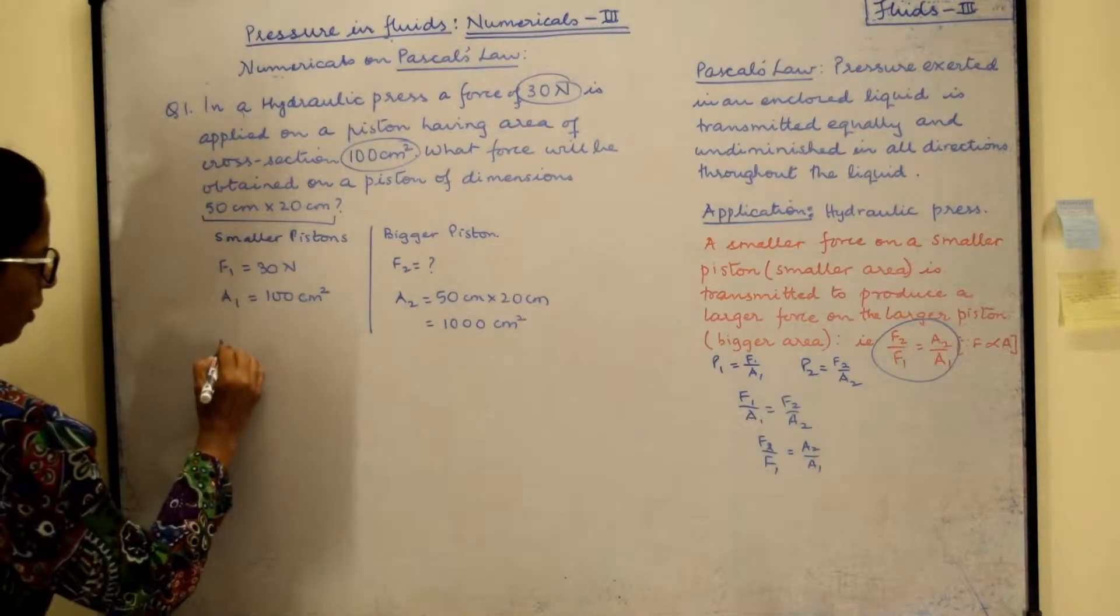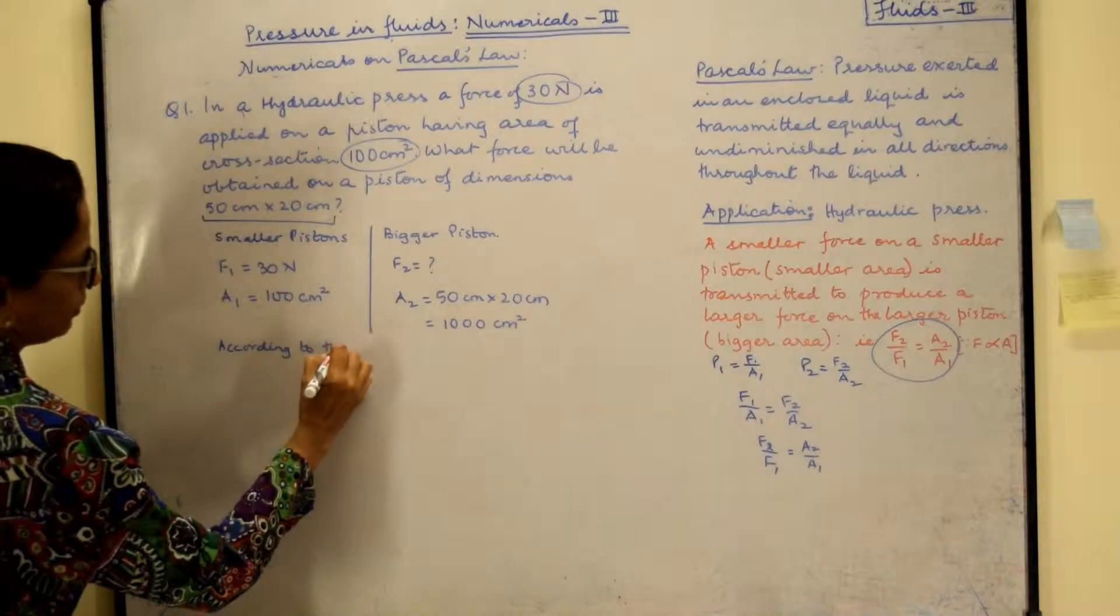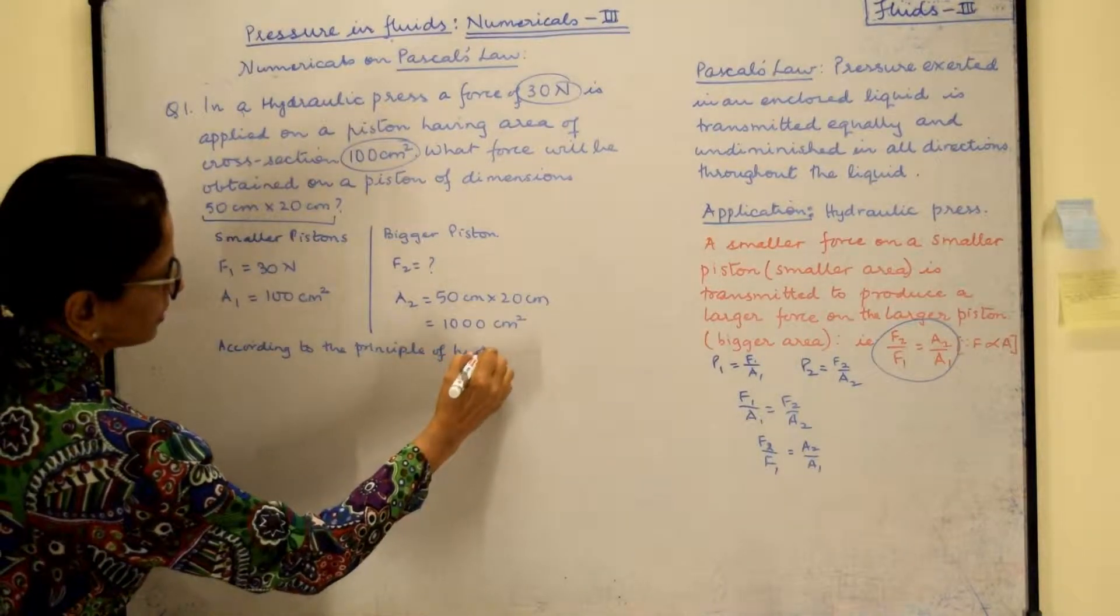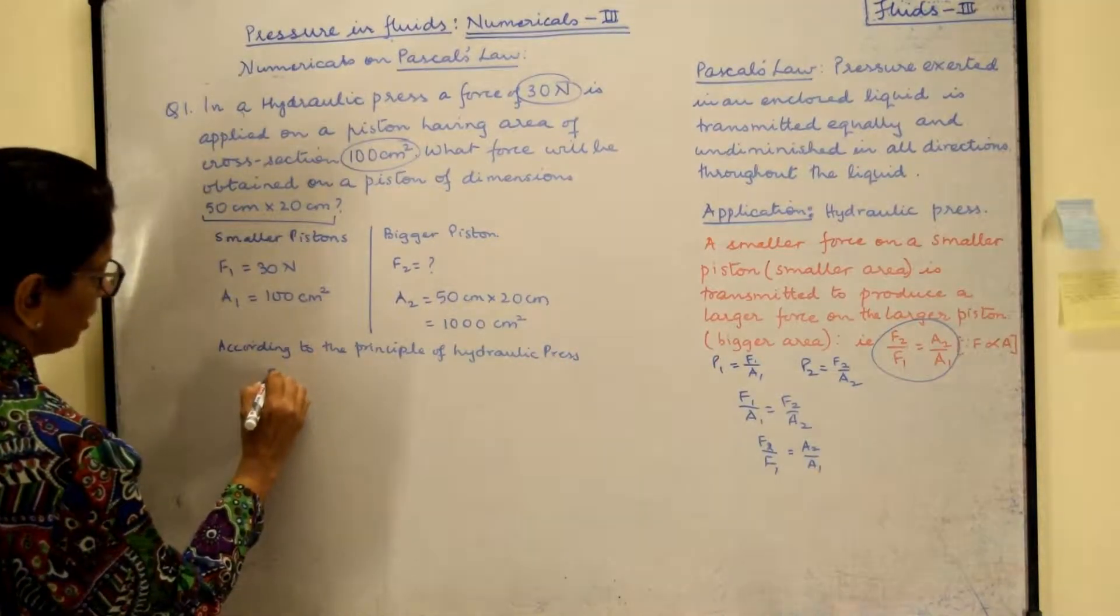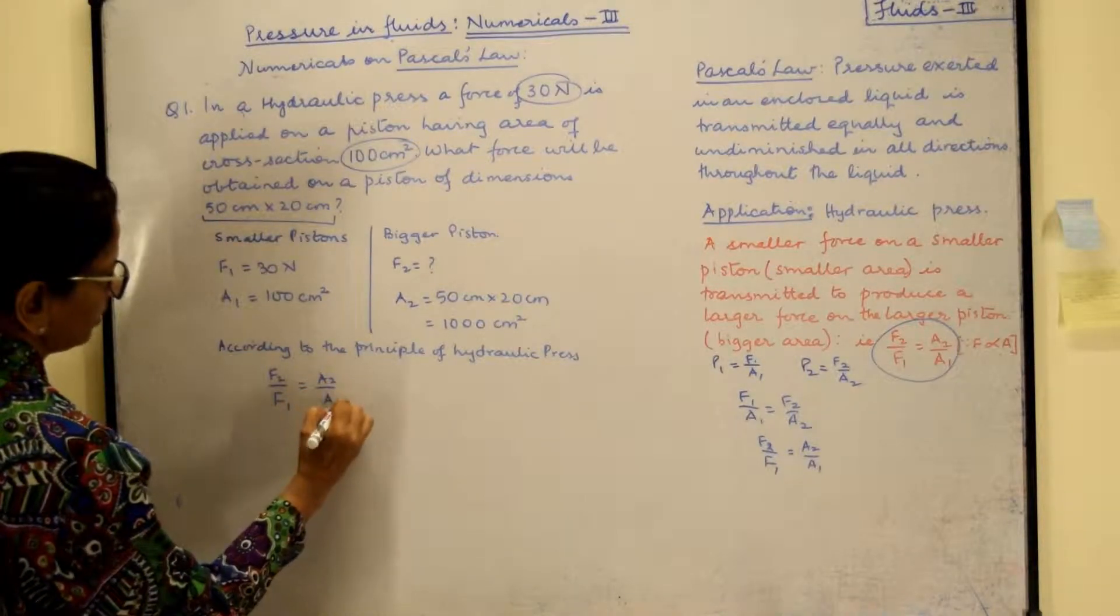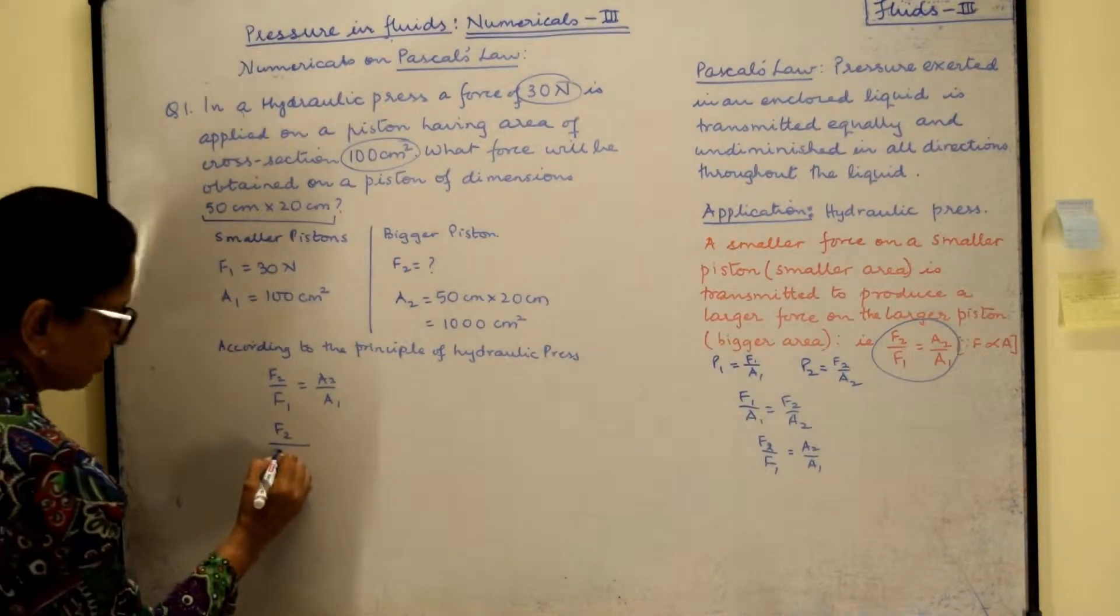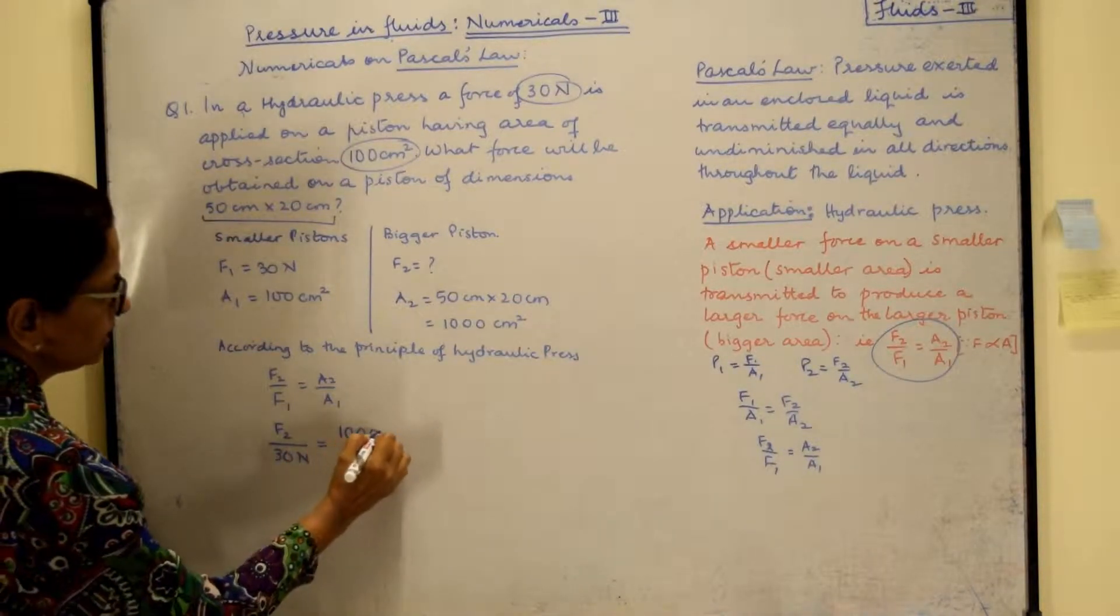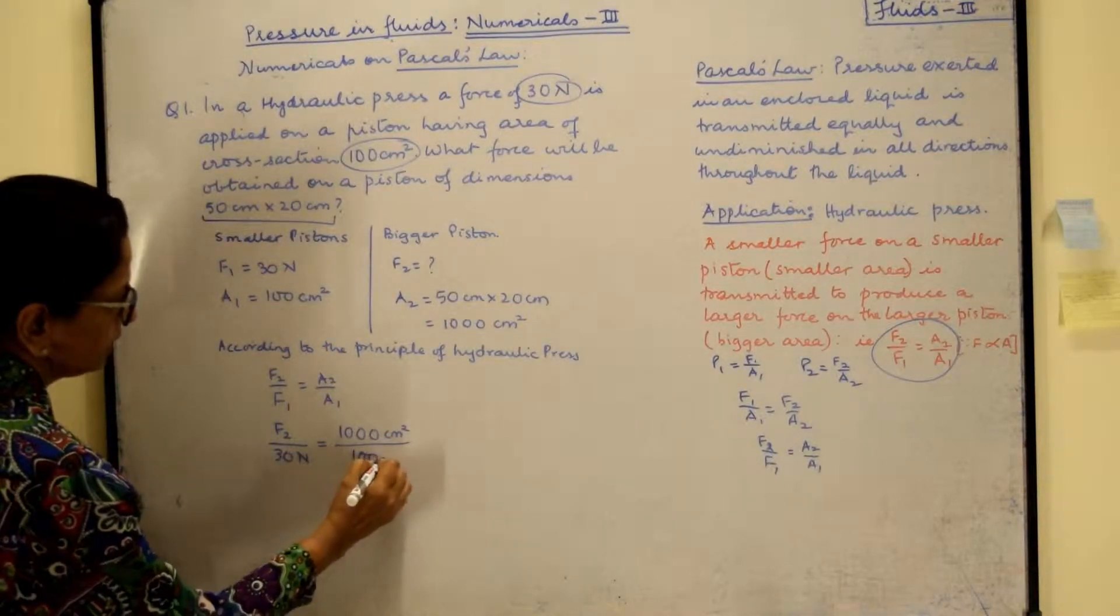Now you will say according to the principle of hydraulic press, what is our formula? F2 upon F1 is equal to A2 upon A1. We have to find F2. So F2 stays as it is. F1 becomes 30 newton and A2 is 1000 centimeter square and A1 is 100 centimeter square.